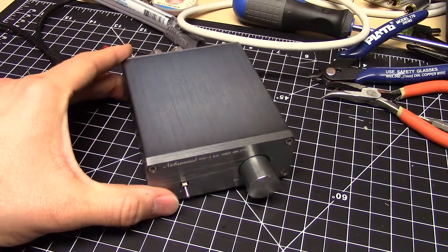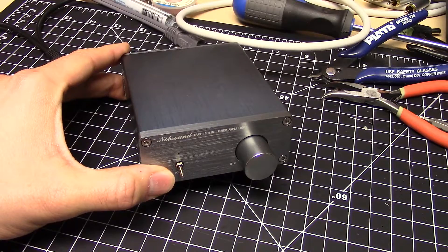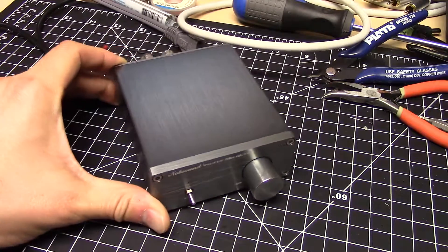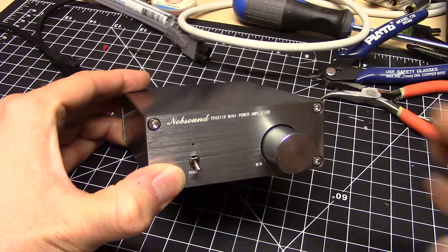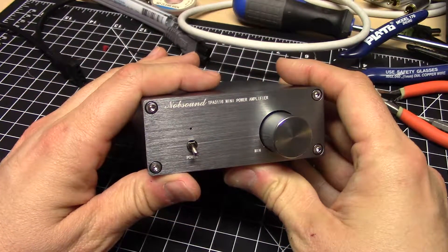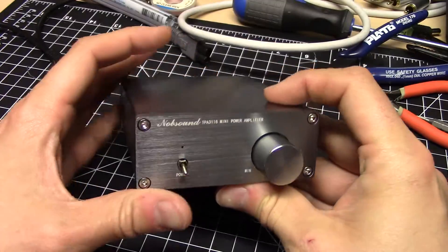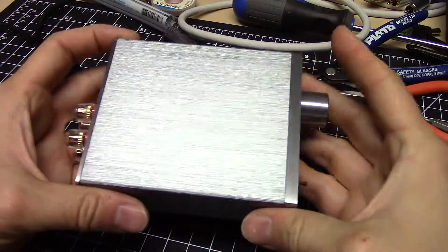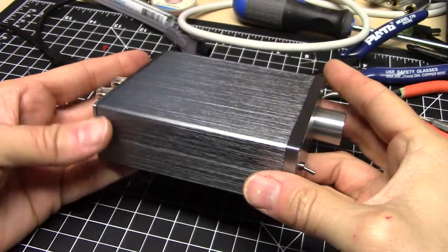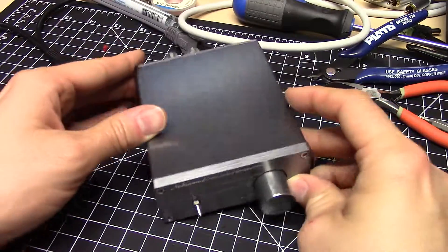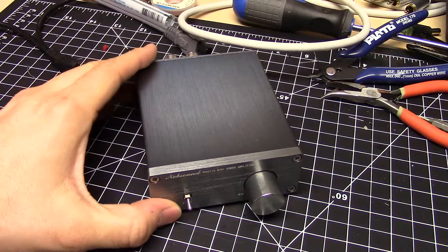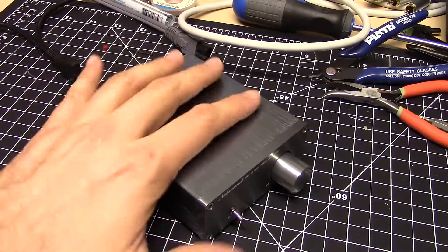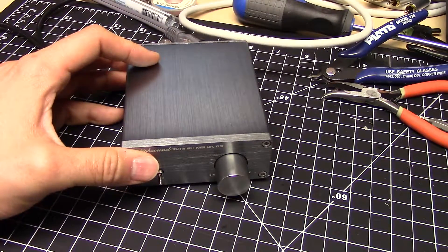Here's the Breeze Audio TPA3116 power amplifier. This particular one is branded Knob Sound, but you can buy these off eBay or Amazon. I got this one from Amazon for $40 shipped with Amazon Prime, and they're all basically identical inside.